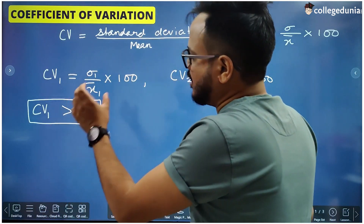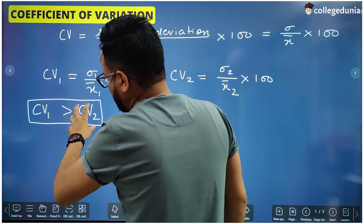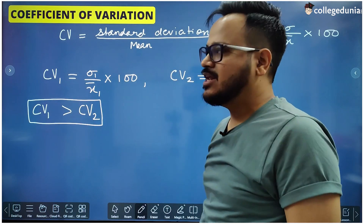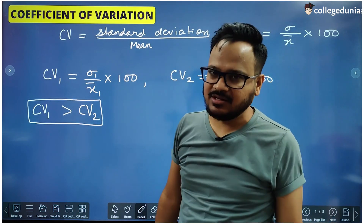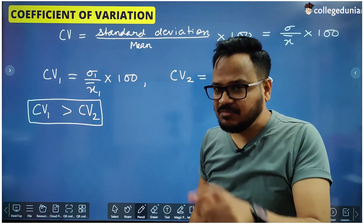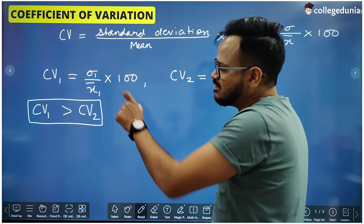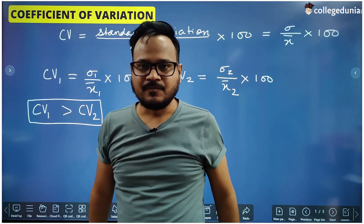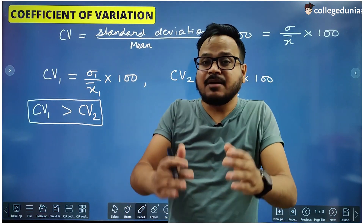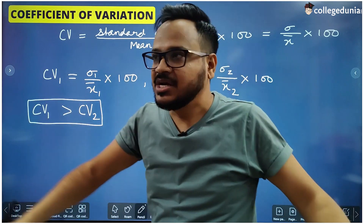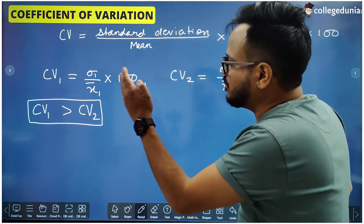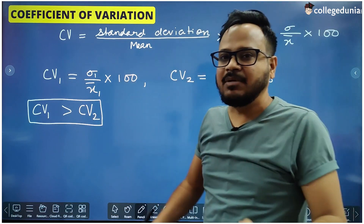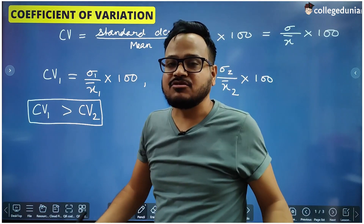If the coefficient of variation of the first series is more than the coefficient of variation of the second series, this means that the values in the first series are more variable — they are more scattered, more dispersed — and the values in the second series are less variable or less dispersed.